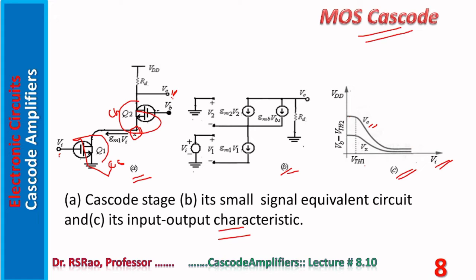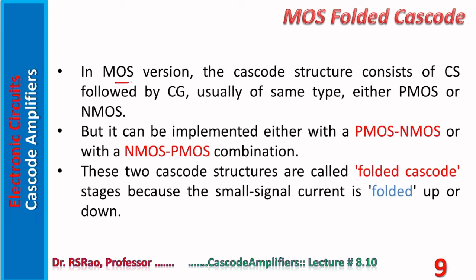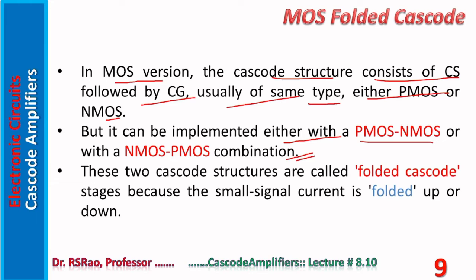In the MOS version, the cascode structure consists of CS followed by CG, usually of the same type — either PMOS or NMOS transistors. But it can also be implemented with a PMOS-NMOS or NMOS-PMOS combination. In such a case, the cascode pair is called a folded cascode. The reason is that the small-signal current is folded up or down.